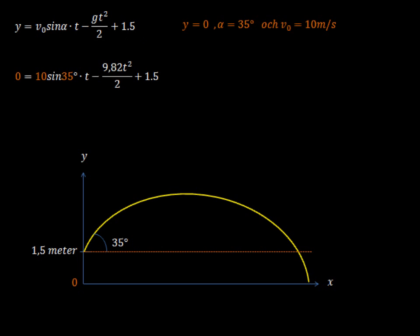Now, let's continue. We have the formula up here. And remember how I said that you'll need to know the initial conditions, and when you have them, you'll just replace them. And we know that y will equal 0 when the ball hits the ground. We know that the initial angle was 35 degrees. What we don't know is how long it takes. So we set up our equation.